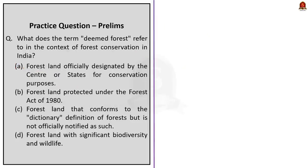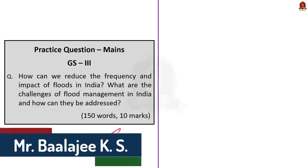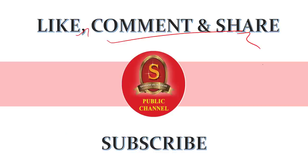Moving on to the last question. What does the term deemed forest refer to in the context of forest conservation in India? This is also a very easy question. If you have listened to our discussion, the correct answer here is option C, forest land that conforms to the distant definition of forest but is not officially notified as such. So, the correct answer once again here is option C. The main question based on today's discussion is displayed here. Interested aspirants can write the answer for this question and post it in the comment section. If you like today's video, like, comment and share it with your friends. For more updates regarding UPC preparation, subscribe to Shankara Ace Academy's YouTube channel. Thank you for listening.